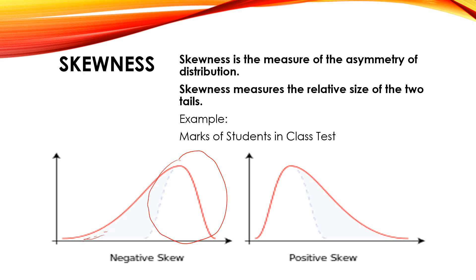If the test difficulty level is high, mostly students will get less marks and the data will shift towards the left side. Only few students will get high marks. The distribution becomes asymmetrical with a bend in the tail towards the right side — that distribution becomes positively skewed. If the tail is bent on the positive side it is positively skewed; if on the negative side, it is negatively skewed.